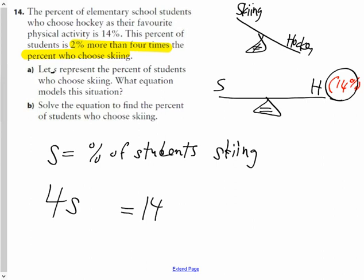Now this is still 2% more, isn't it? Do you agree this is still 2% more? So how do I make that balanced? If this is 2% more than four times the number of people who chose skiing, I have to add 2 more on this side. So once I write that, now they're balanced.